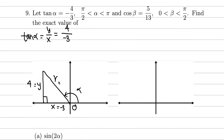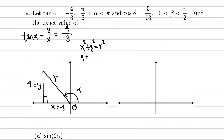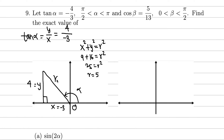Using the Pythagorean theorem, x² + y² = r²: (-3)² + 4² = 9 + 16 = 25, so r = 5. Since r (the hypotenuse) is always positive, r = +5. We now have all three sides of the triangle for α.